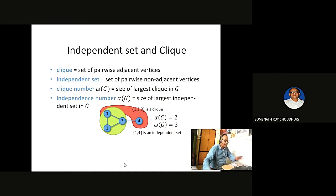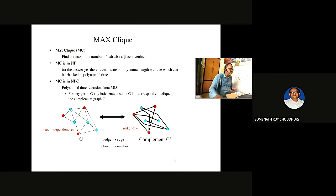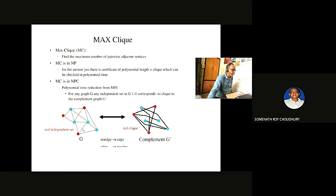The clique and independent set are crucial. A clique is a set of pairwise-connected nodes; an independent set (like u and w) has no common connection. These are NP complete problems but they are essentially the same problem — if you can find one solution you can find the other.